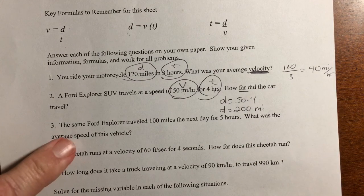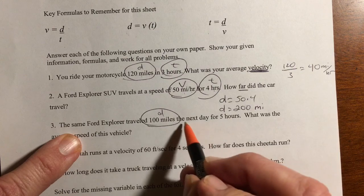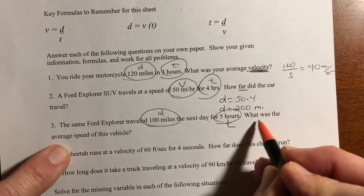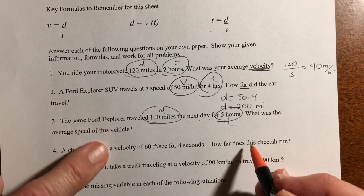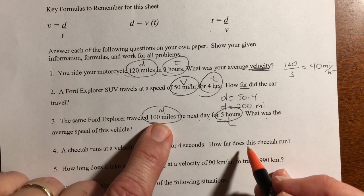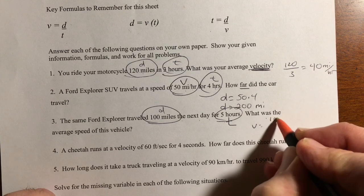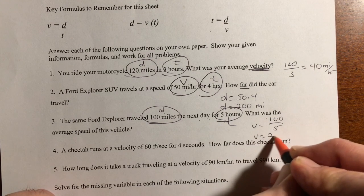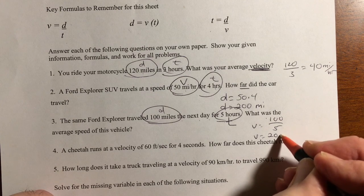Number three, the same Ford Explorer traveled 100 miles. That's a distance. The next day for five hours, that's a time. What was the average speed of this vehicle? So speed and velocity are the same. So it's distance divided by time. So 100 divided by five. So the velocity equals 100 divided by five. And V equals 20. Again, that's going to be miles per hour.